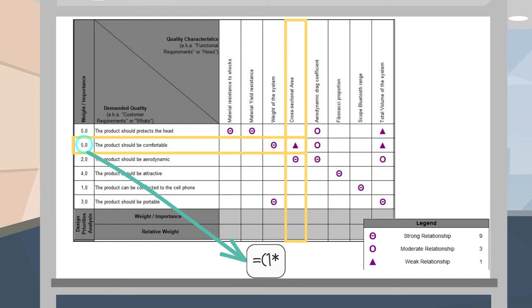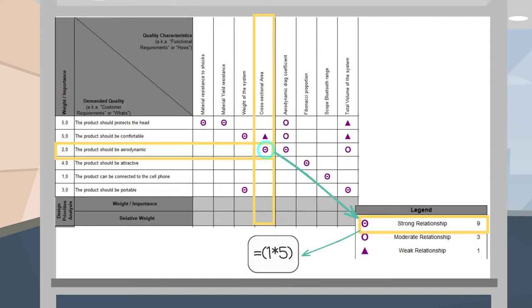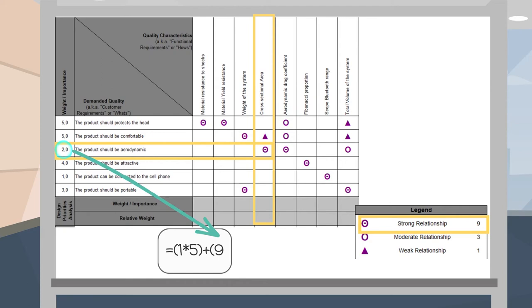In like manner, the importance of 'the product is comfortable' was scored by the customer as five. The relationship between 'the product is aerodynamic' and cross-sectional area was considered strong by the design team, meaning it is scored as nine. Finally, the importance of 'the product is aerodynamic' was scored by the customer as two, which delivers a result of importance of 23.